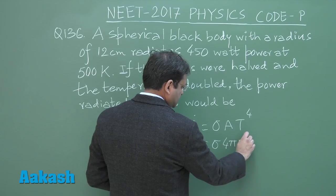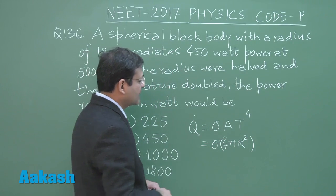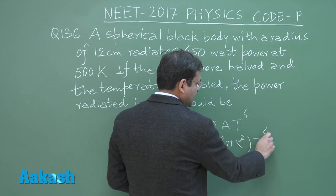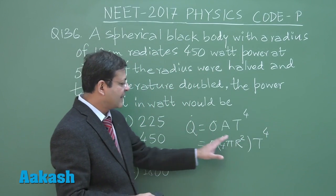Here, we have 4 pi r square. And temperature as it is, this temperature is in Kelvin. Now, you can see it is dependent on r square.